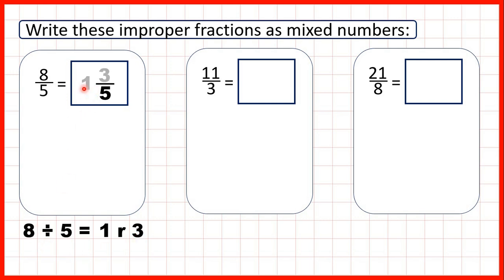That's because 1 times 5 is 5, and then we need 3 more to get to 8. So our whole number is 1 — that's the number we get from our division — and the remainder we write as the numerator. So 8 fifths is equal to 1 and 3 fifths as a mixed number.